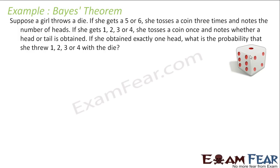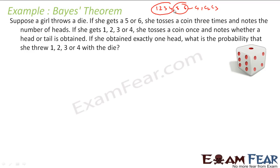A girl throws a die. If she gets 5 or 6 — out of the possible outcomes 1, 2, 3, 4, 5, 6 — she tosses a coin thrice (C1, C2, C3) and notes the number of heads. If she gets 1, 2, 3, or 4, she tosses a coin only once and notes whether it is a head or tail.